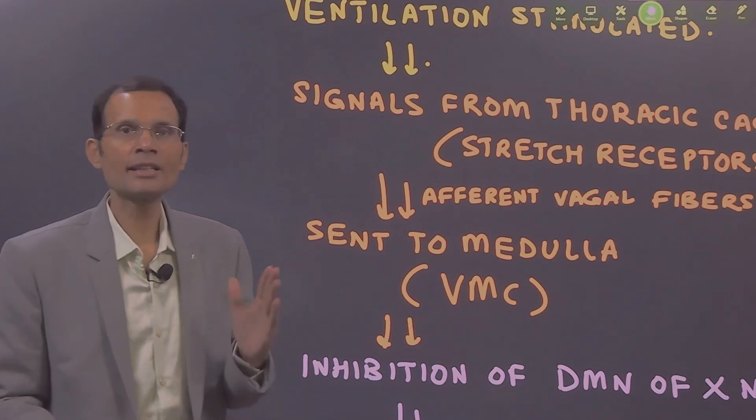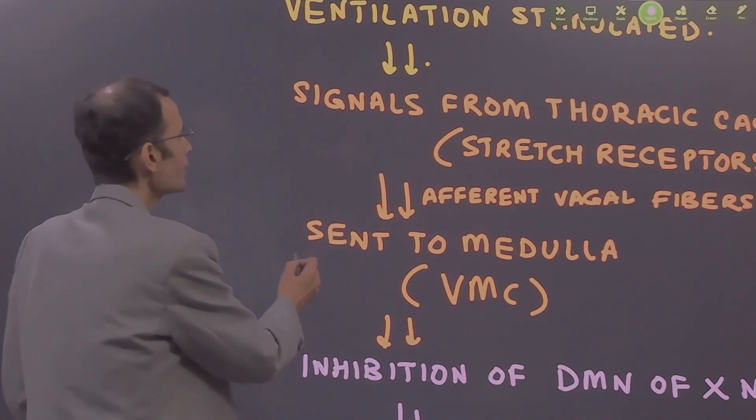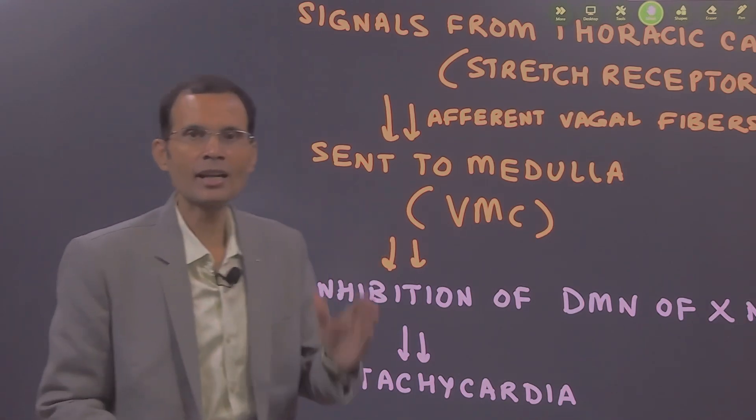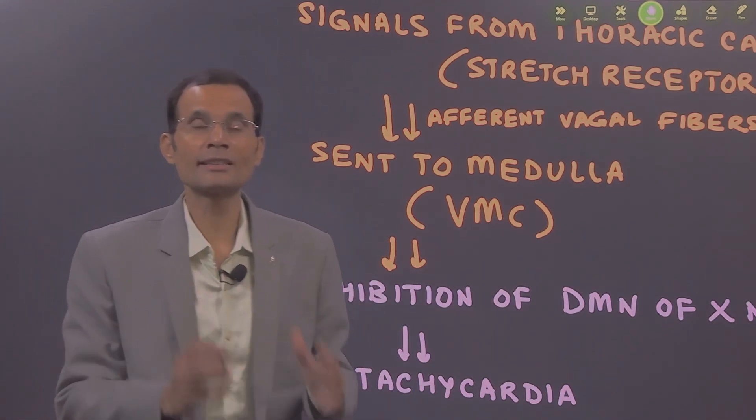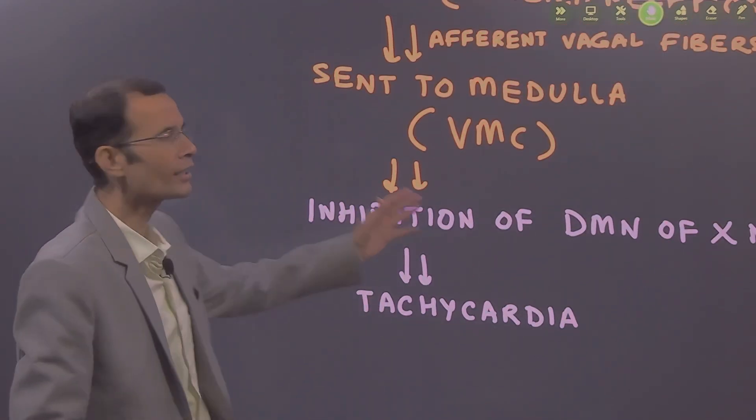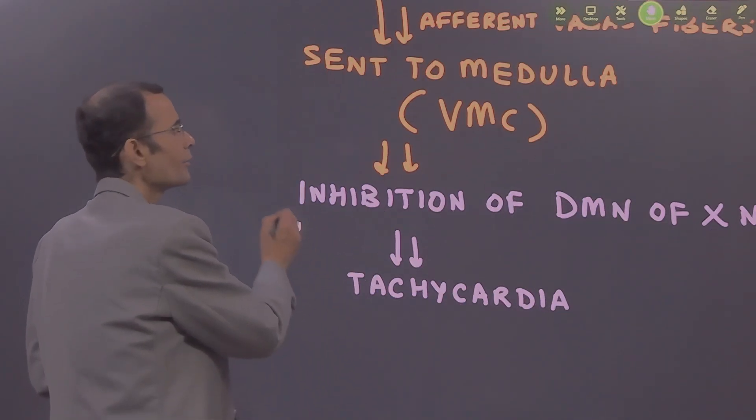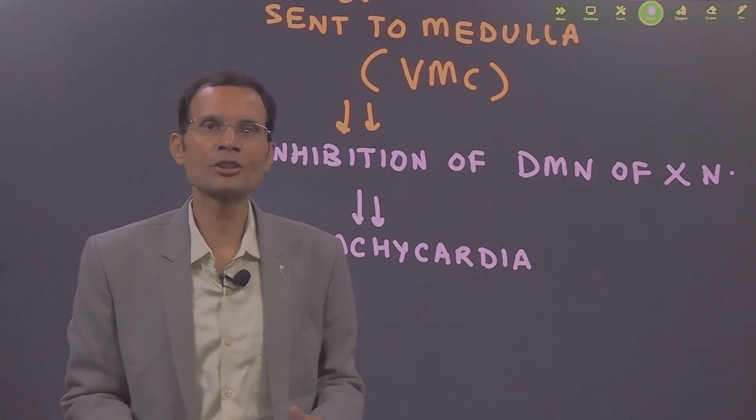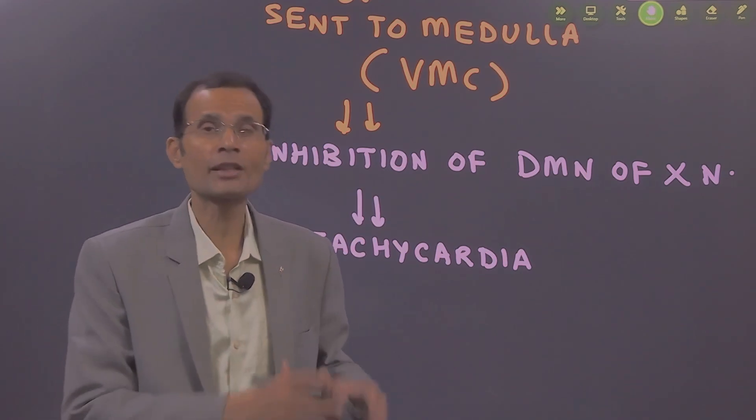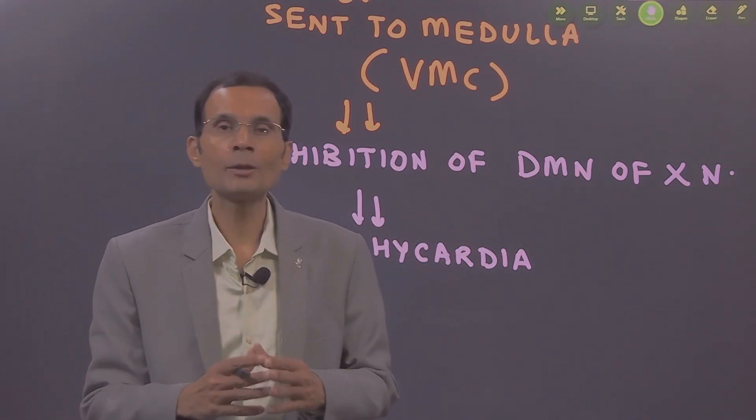Afferent signals are sent via the vagal fibers back to the medulla, specifically to the vasomotor center. The vasomotor center receives these signals from the thoracic cage, and there is inhibition of the vagal efferent center. The dorsal motor nucleus of the vagus (DMN of X) is inhibited.